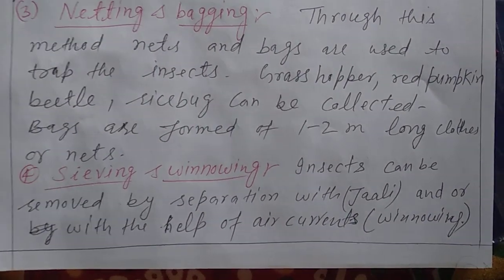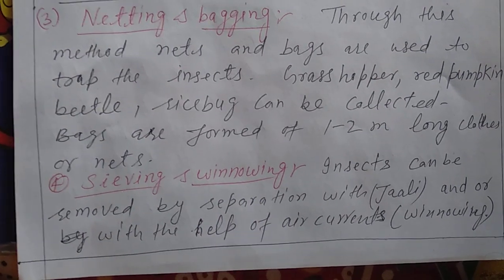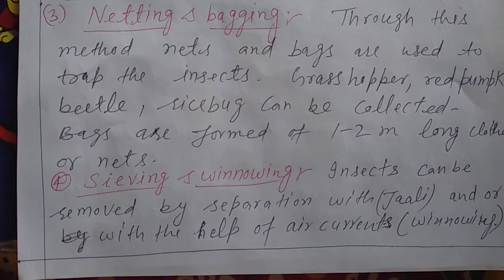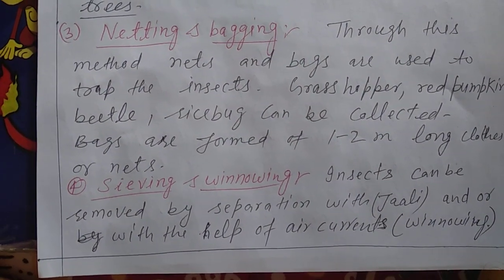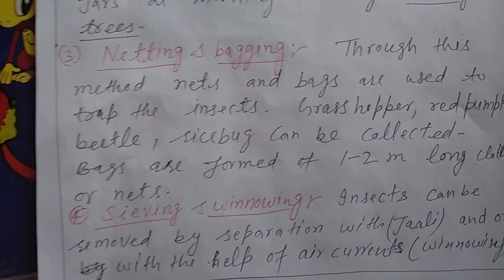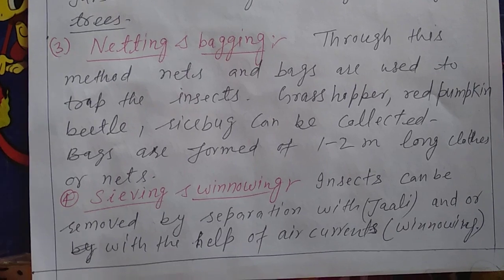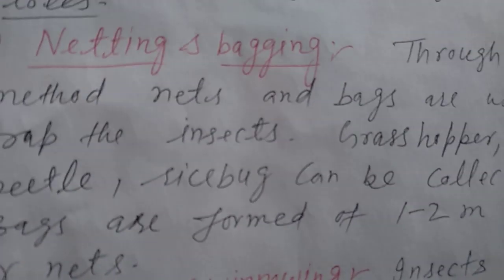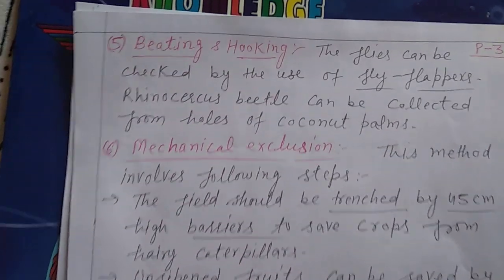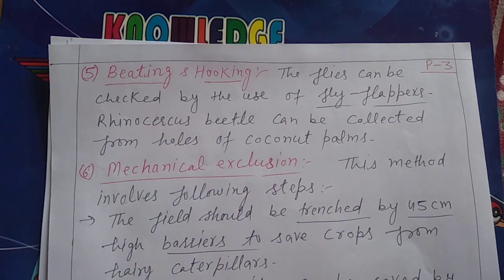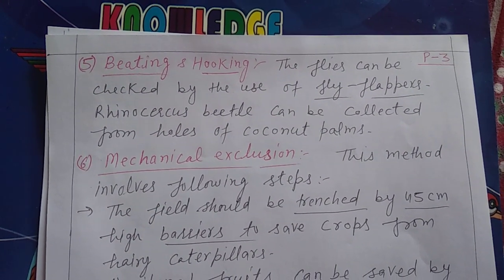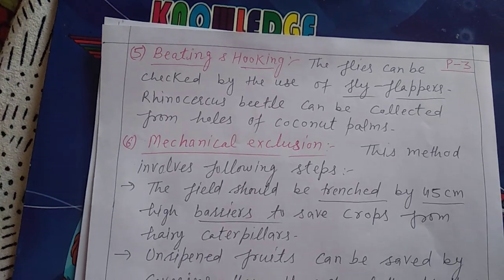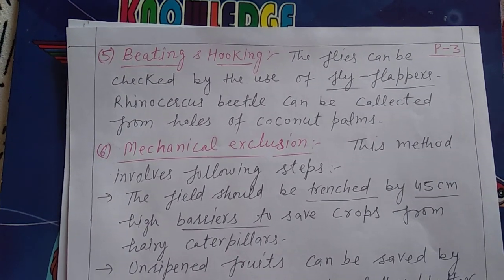Next is beating and hooking. You can control flies using fly flappers, which are mechanical tools. Rhinoceros beetles can be collected from holes in coconut palms using this method.